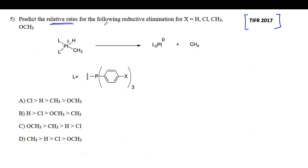Moving onwards to the next question, TIFR 2017: Predict the relative rates for the following reductive elimination for X equals H, Cl, CH3, and OCH3. Basically here we are talking about what will be the influence - this L is a spectator ligand, it is not leaving. Who's leaving? CH3 and H, they are leaving as CH4, they are causing the reductive elimination. The L ligand is a spectator ligand, it's not leaving. What will be the influence of L depending on varying the different X groups on this rate of reductive elimination?